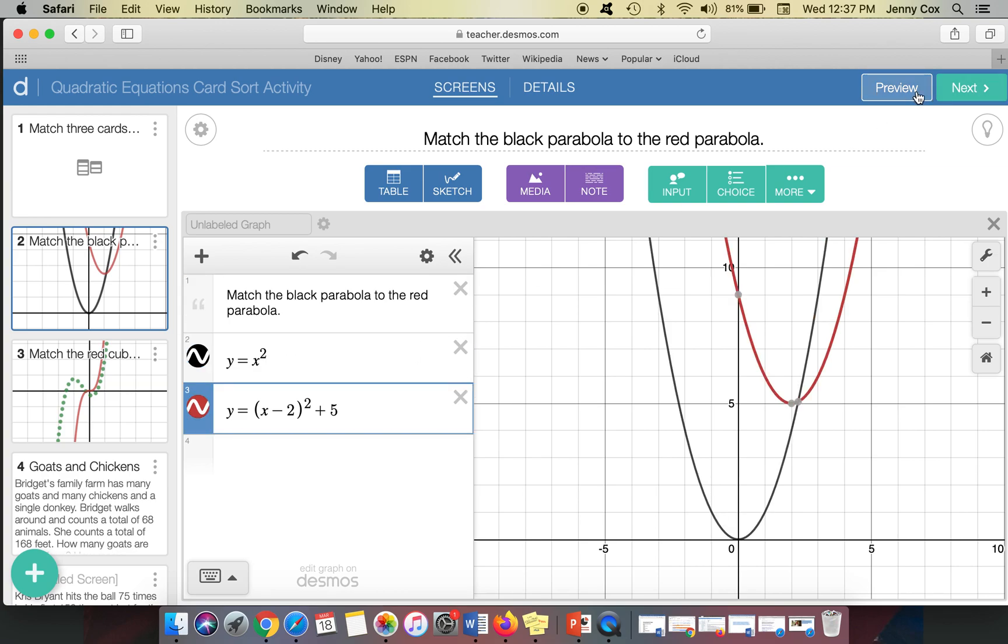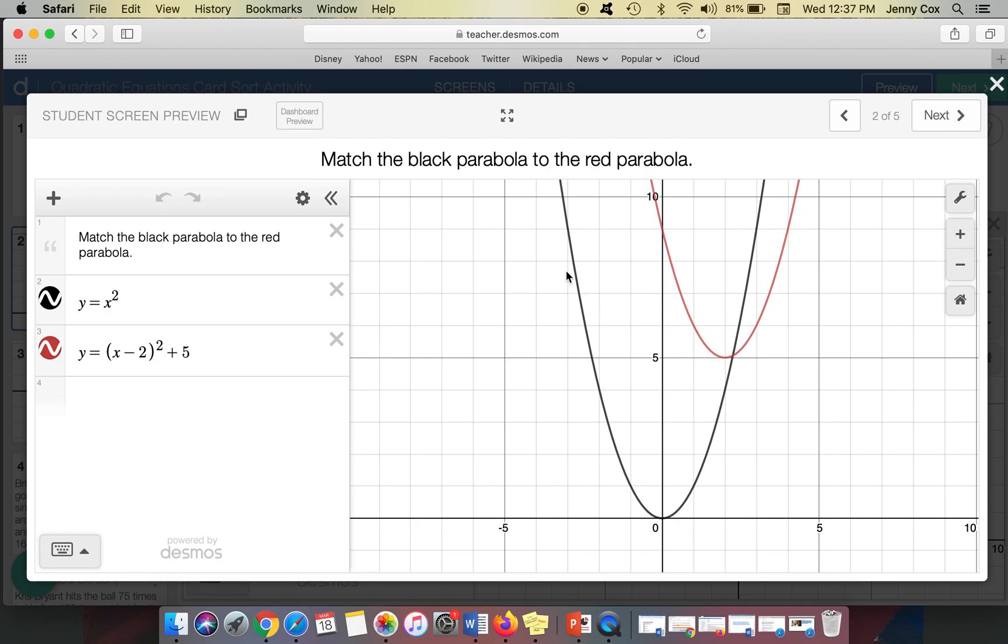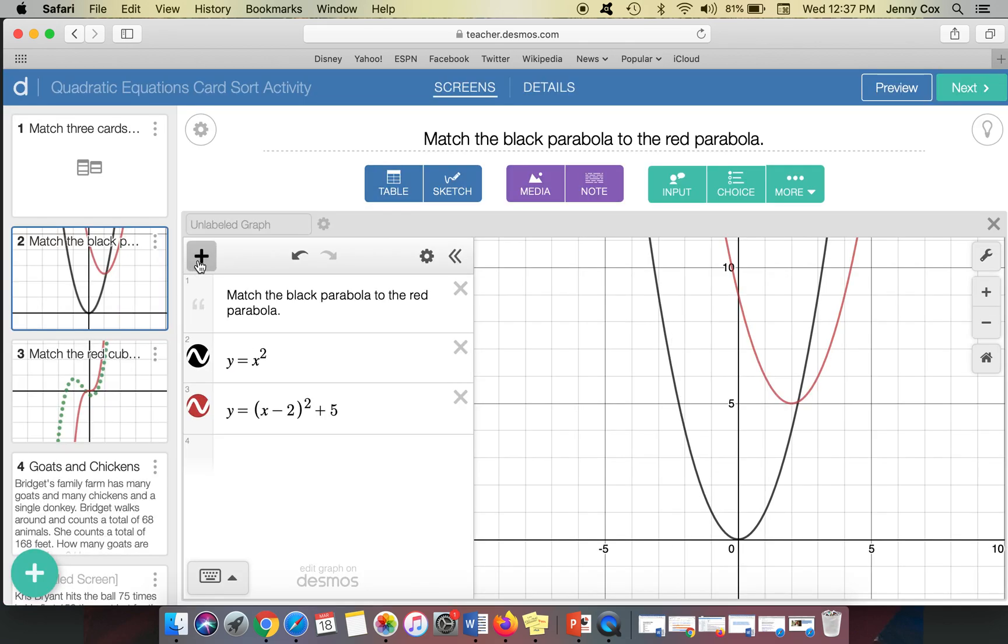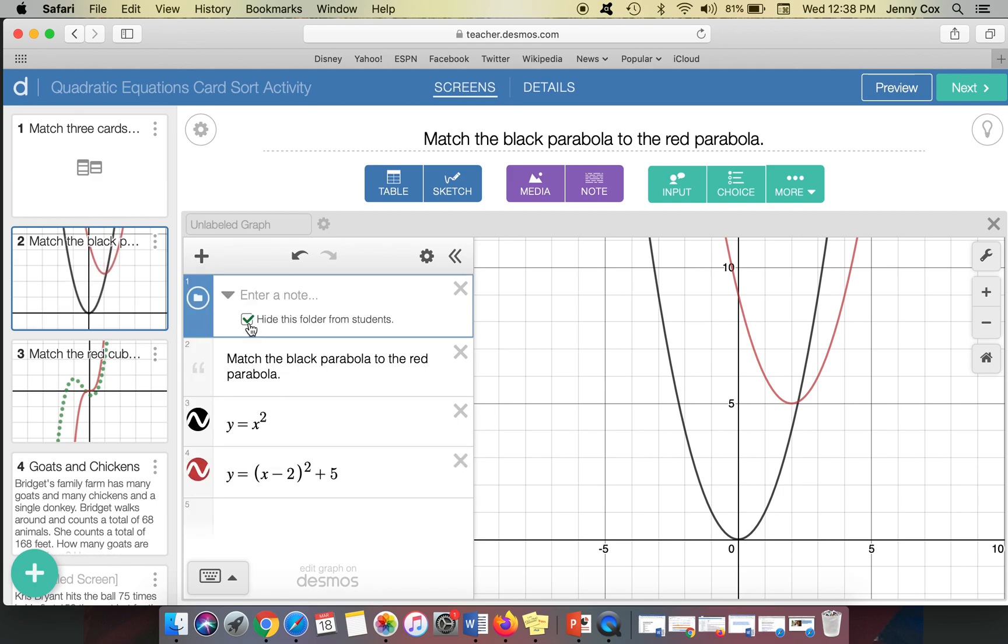But when I have these two functions, when I go into preview, students can still see both of those, and they can see the code written right here. And I don't want that. So what I do is I add a folder, and I can click hide this folder from students. Now you can name the folder if you want, but students will not see that folder.